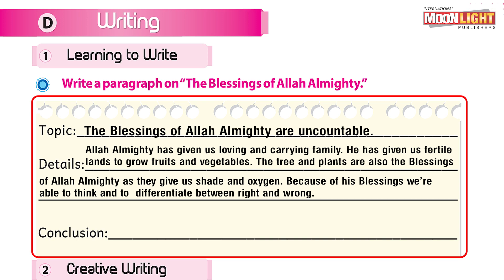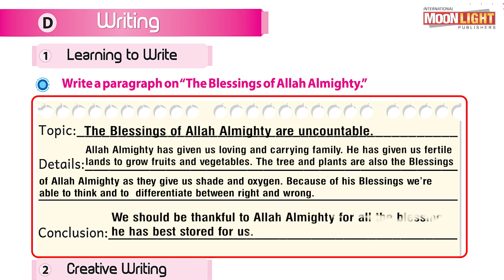He has given us fertile land to grow fruits and vegetables. The trees and plants are also the blessings of Allah the Almighty, as they give us shade and oxygen. Because of His blessings, we are able to think and to differentiate between right and wrong. These are the supporting details.